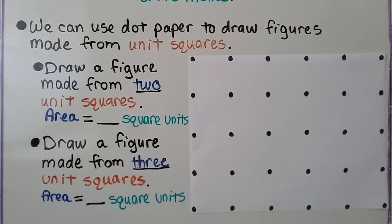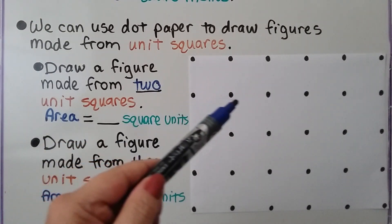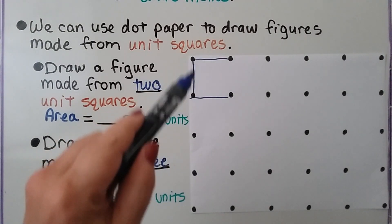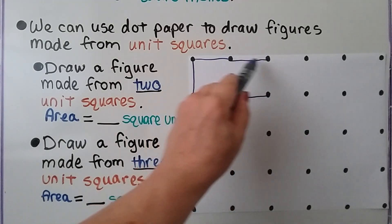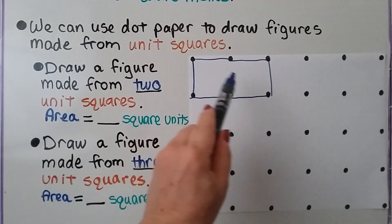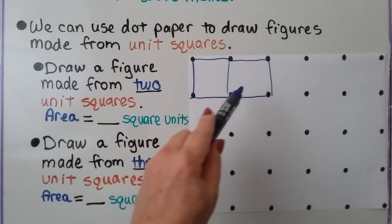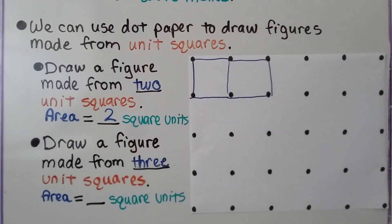We can use dot paper to draw figures made from unit squares. It's asking us to draw a figure made from two unit squares. I connect these dots and these dots, and I have two squares — the area is two square units.